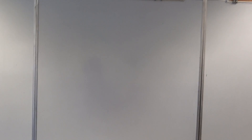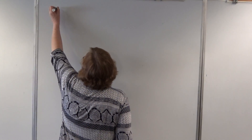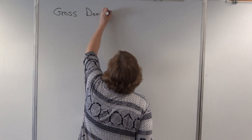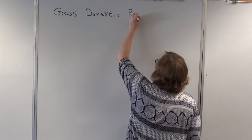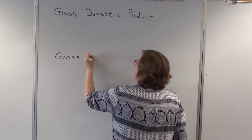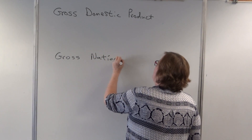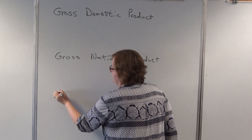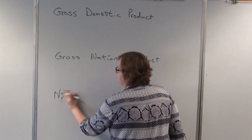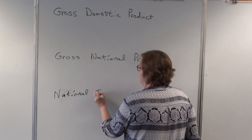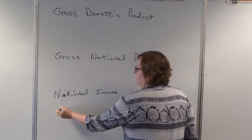So they came up with a series of measures. One of them is called gross domestic product, one is called gross national product, and then there's something called national income, personal income...